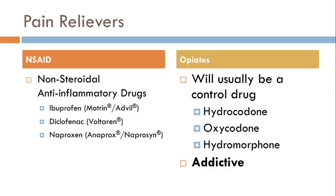Let's discuss pain relievers. The first category is NSAIDs — non-steroidal anti-inflammatory drugs. Unlike steroidal anti-inflammatory drugs like prednisone, NSAIDs are called that simply because they are not steroids, though they can be harder on the kidneys at times. Three examples are ibuprofen, diclofenac, and naproxen, with brand names Motrin/Advil, Voltaren, and Aleve respectively.